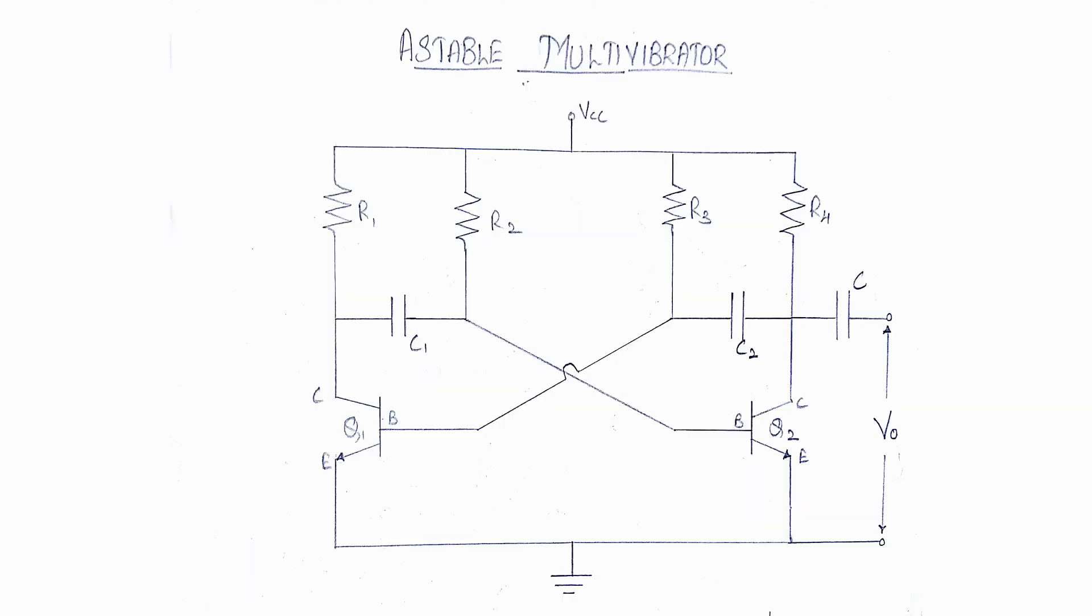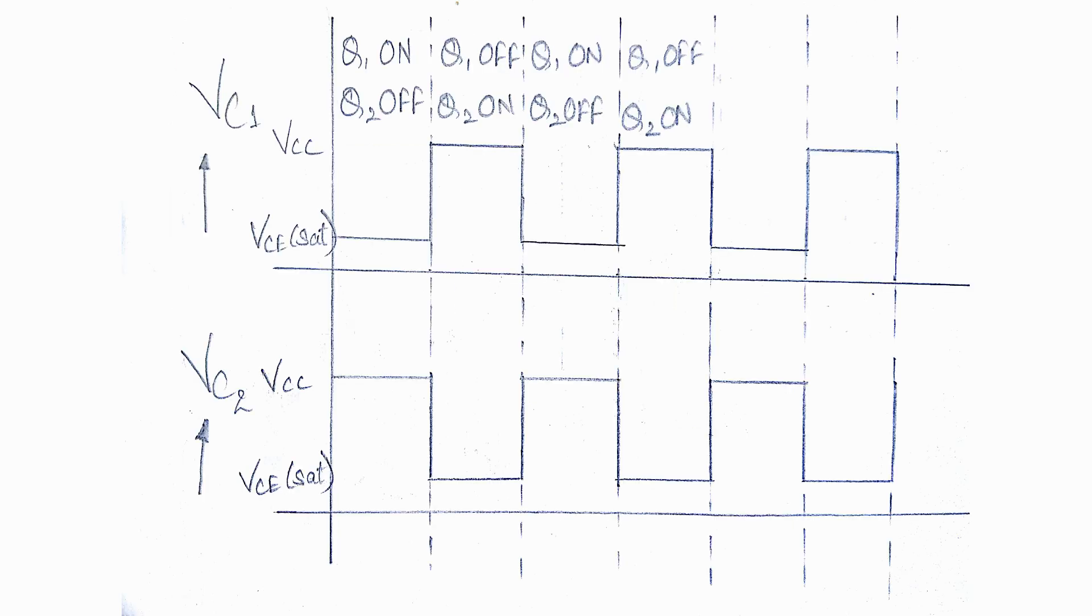First is the astable multivibrator. An astable multivibrator is such a circuit that it automatically switches between the two states continuously without the application of any external pulse for its operation. As this produces a continuous square wave output, it is called a free running multivibrator. The DC power source is a common requirement. The time period of these states depends upon the time constant of the components used. As the multivibrator keeps on switching, these states are known as quasi-stable or half-stable states. Hence, there are two quasi-stable states for an astable multivibrator.